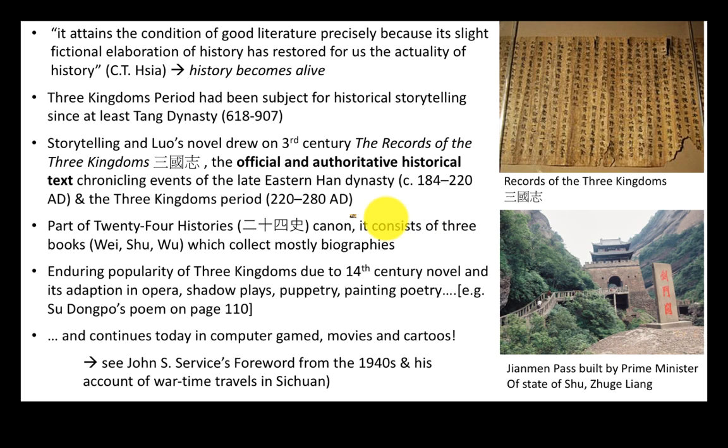As early as the Tang Dynasty — 7th to 10th century, perhaps the second great dynasty in Chinese history — there have been popular retellings of these events. So in a way, our novel can be traced as far back as the Tang Dynasty. This historical work, the Sanguozhi or Records of the Three Kingdoms, is part of a much larger historical canon: 24 histories, a big historical anthology of histories written about the preceding dynasties, going all the way up to the Ming.